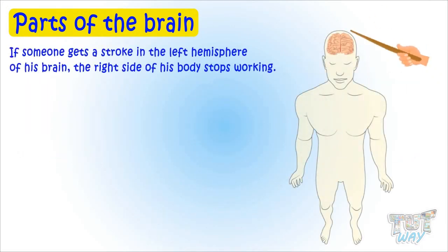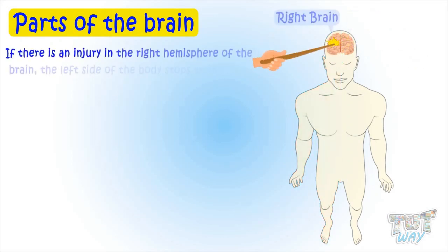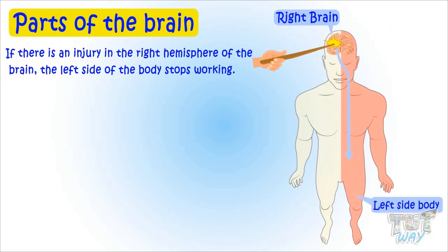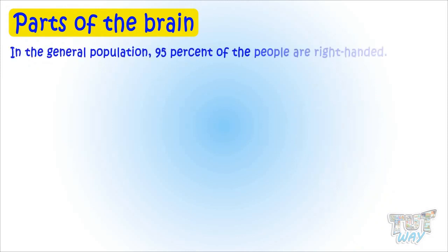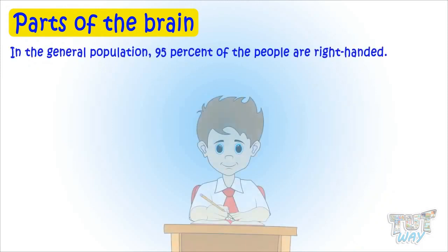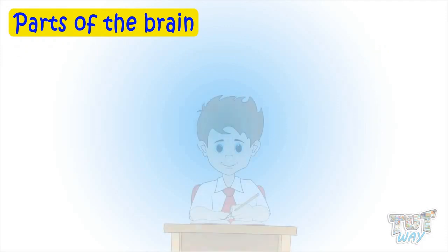If someone gets a stroke in the left hemisphere of the brain, the right side of the body stops working. If there is an injury to the right hemisphere, the left side of the body stops working — this is why one half of the face may droop after a stroke. In the general population, 95% of people are right-handed, meaning the left hemisphere is more dominant. In left-handers, the right hemisphere is more dominant.